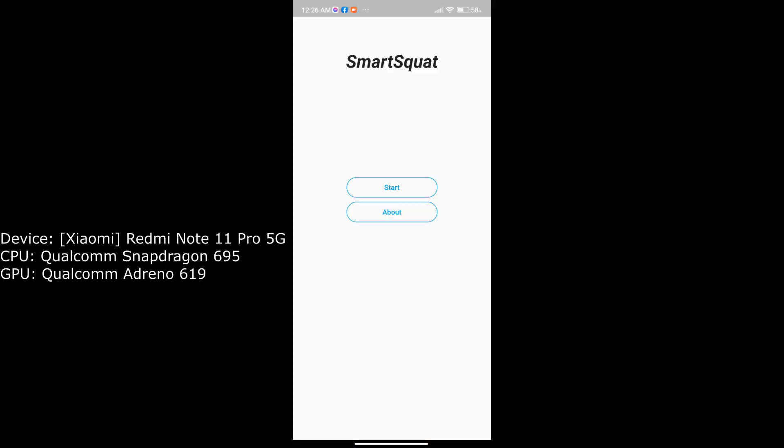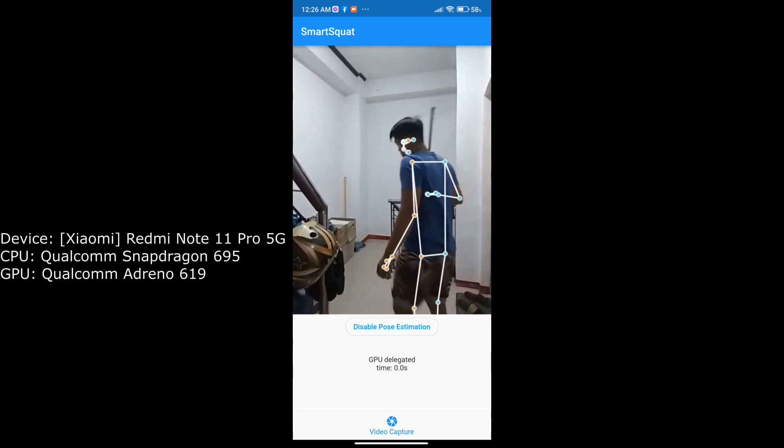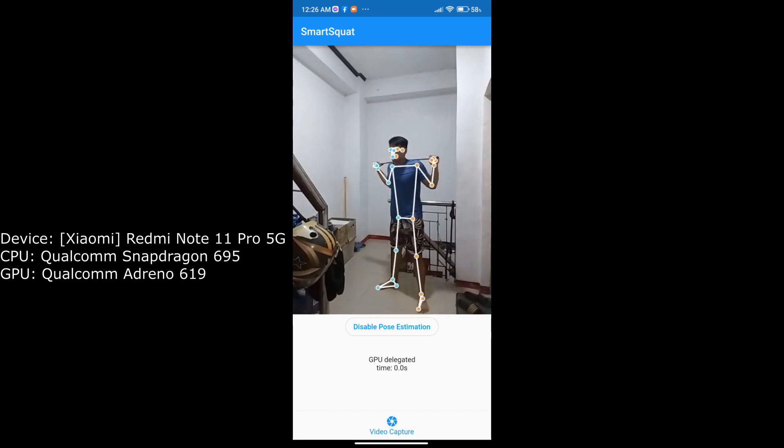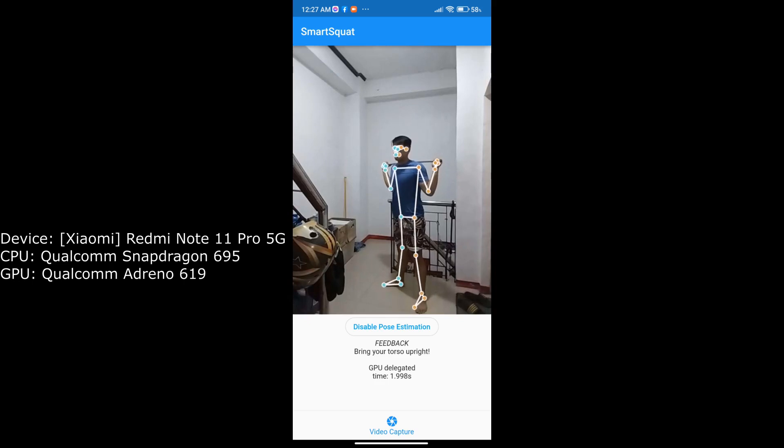In this demo, I am using the app version with GPU delegation. I'm using the same device here with an Adreno 619 GPU by Qualcomm. The previous app demo that we just saw takes us about 7 to 8 seconds to assess a single rep, while the GPU delegated app takes only 1.5 seconds. The application evaluates the squat and provides real-time feedback on form corrections needed.